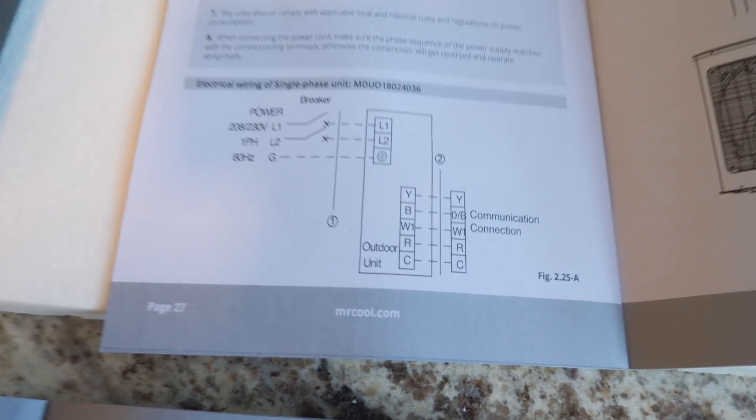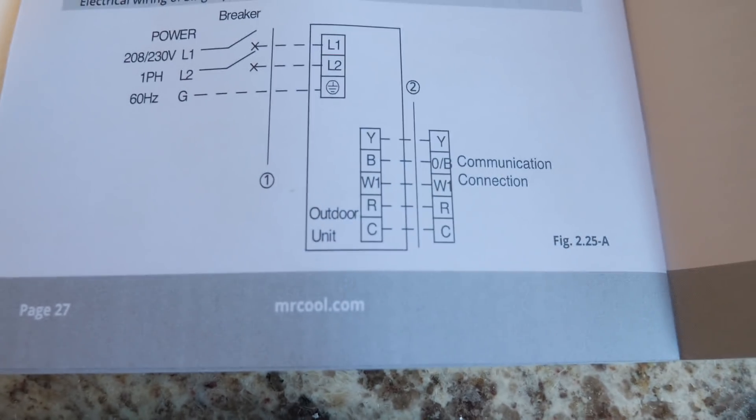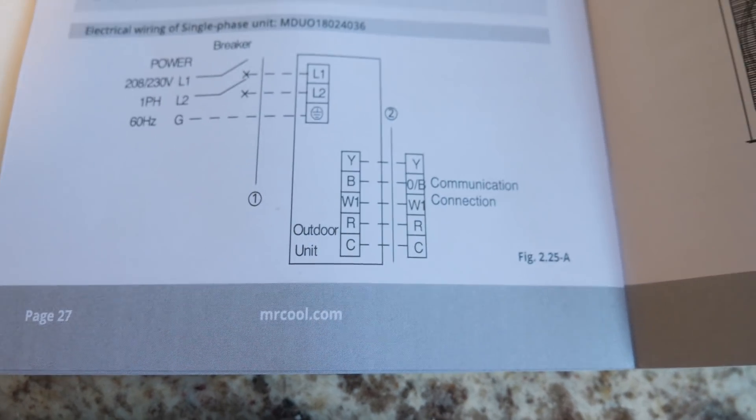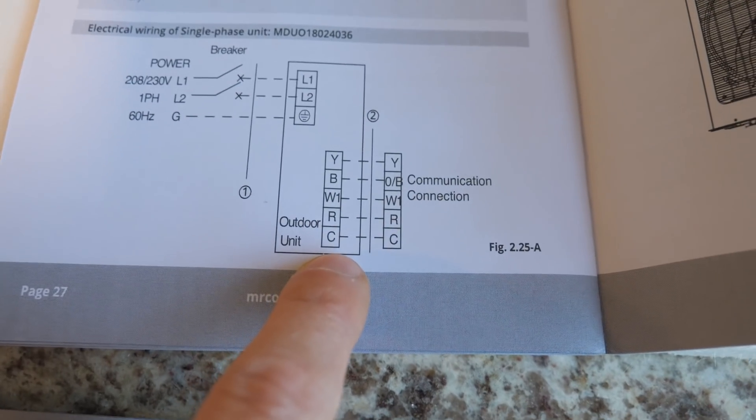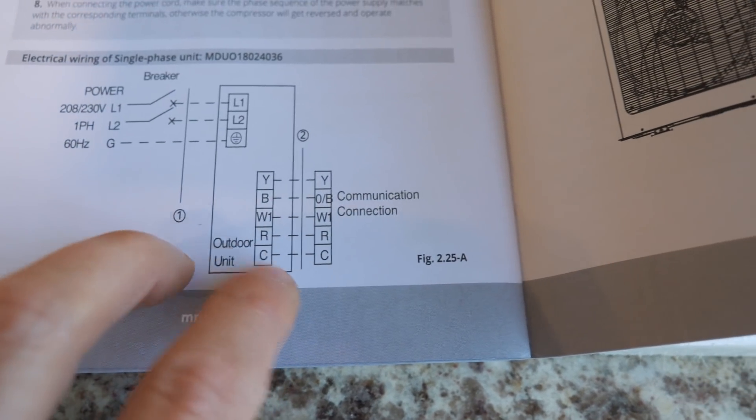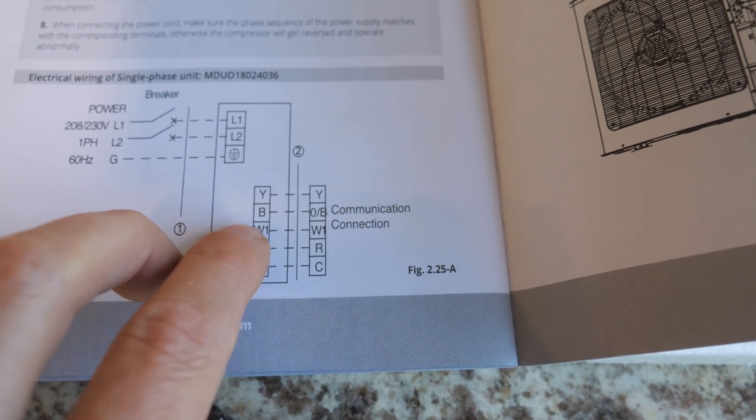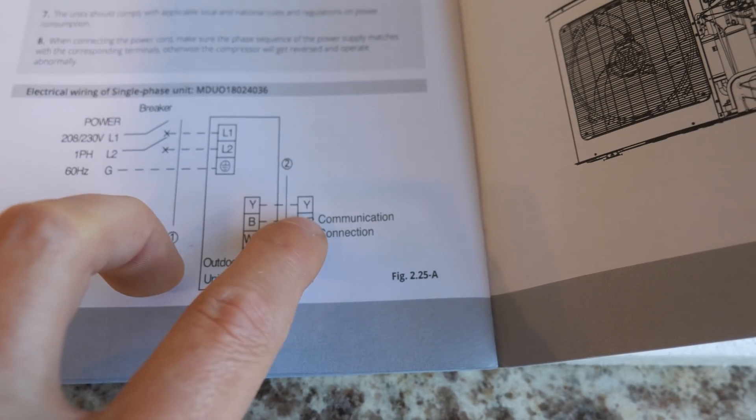So you got to make sure you got the right colored wire to the right terminal, depending on the system you're using. This is the outdoor unit of the system we're using. And the indoor connection to the outdoor unit. So regardless of wire color, C goes to C, R goes to R, W1, B goes to OB, and Y to Y.